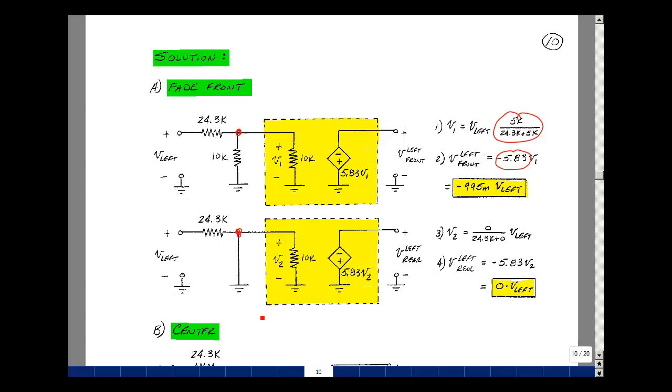For the bottom half of the circuit, I've got a voltage divider again. I've got zero in parallel with 10k, but anything in parallel with zero is zero. In other words, the product over the sum would be zero times 10k over zero plus 10k. And that's going to voltage divide with 24.3k. And whatever voltage is here, then we're going to see a gain of minus 5.83. But this voltage divider is zero. And so we're going to multiply zero by minus 5.83. So we get zero times V left. So the music that's coming in, all of it is going to the left front speaker and nothing's going to the rear.